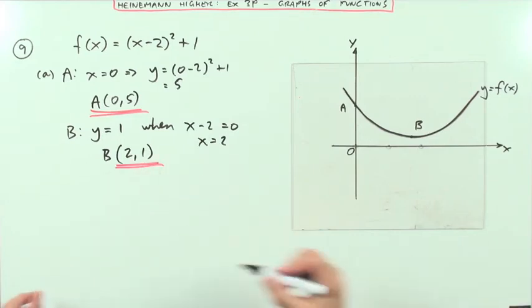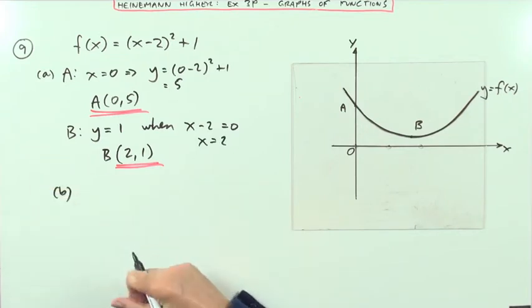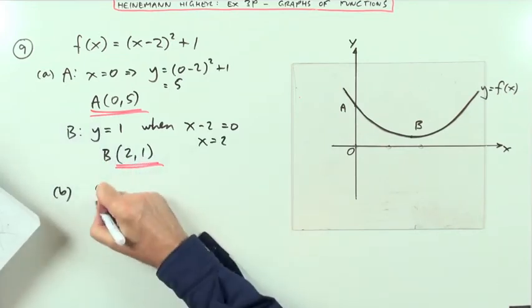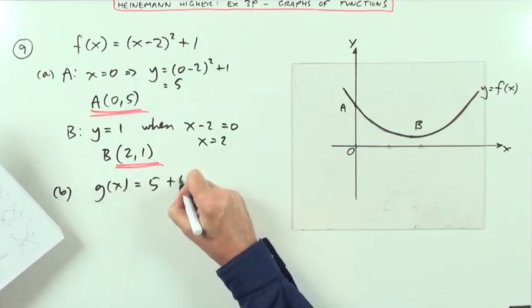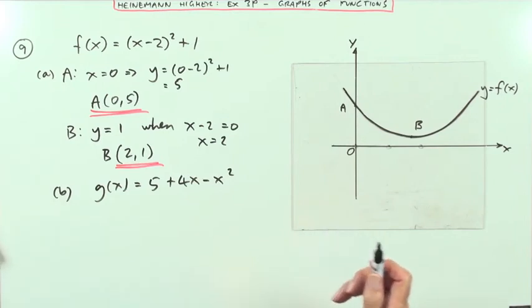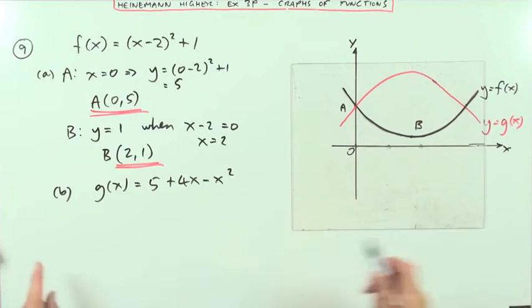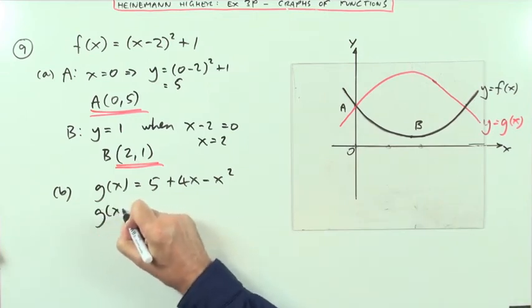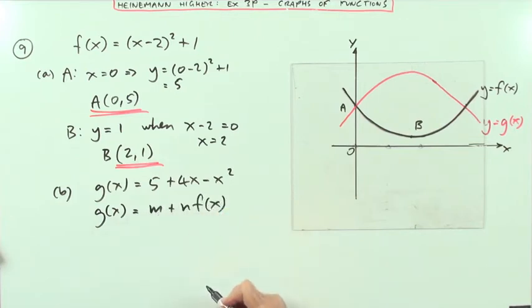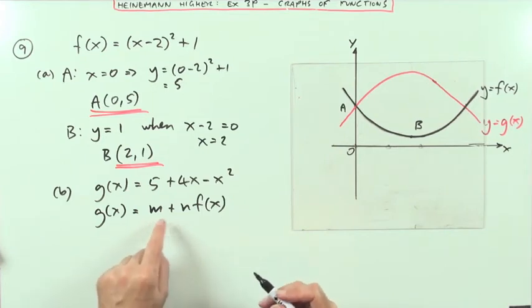Now the second part says there's another function g(x), equaling 5 plus 4x minus x squared, which looks like this. Now, it says g(x) can be written as m plus n times f(x). What are the values of m and n?